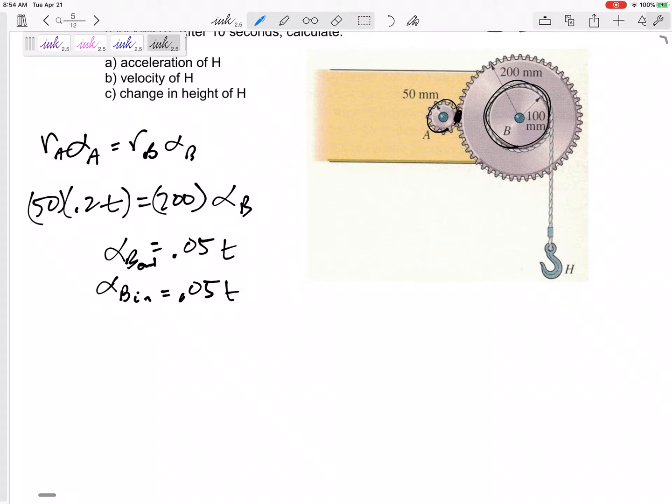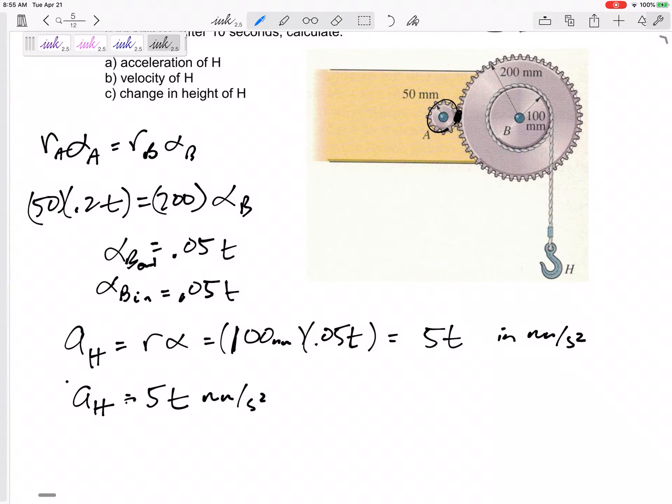Now let me jump from here to H. How can I jump from here to H? Well, the acceleration of H is the acceleration on the edge right here—the tangential acceleration on the edge. And so this would be equal to r*α. This would be 100 millimeters times 0.05t = 5t millimeters per second squared. So the acceleration of H is 5t millimeters per second squared.